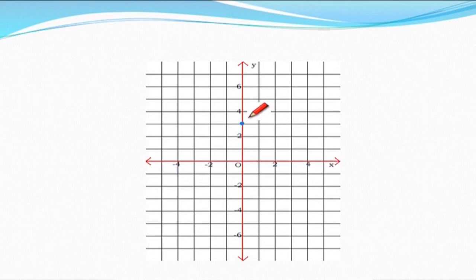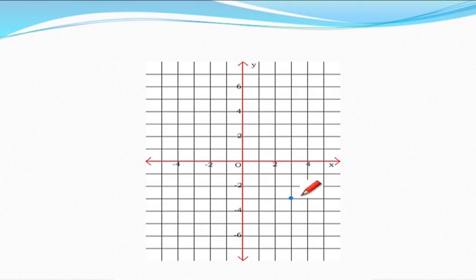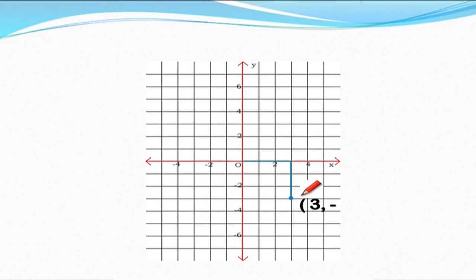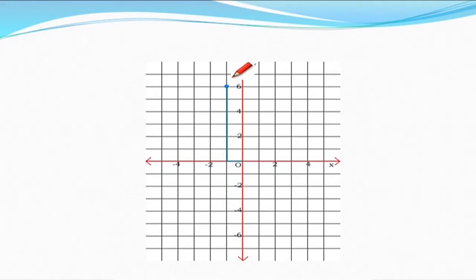Another point is lying on the y-axis at 3, so the coordinates of that point will be (0, 3). Another point is reflected here: when we drop a perpendicular from this point to the x-axis, it intersects at 3, and when we drop a perpendicular to the y-axis, it intersects at -3. The coordinates accordingly are (3, -3). For another point, when we drop a perpendicular to the x-axis we get -1, and when we drop it to the y-axis the point is 6. The coordinates are (-1, 6).